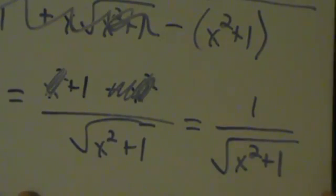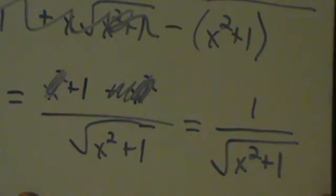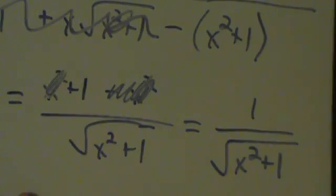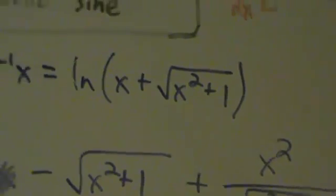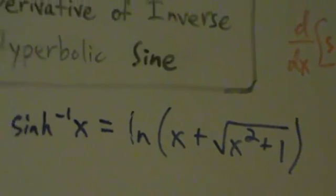And that's the proof that the derivative of the inverse hyperbolic sine equals 1 over root x squared plus 1. The derivative of the inverse hyperbolic cosine will be pretty much the same thing, except instead of plus 1 we'll have minus 1. That video is next in the playlist, and I'll skip some of the repeated details since they're all covered here.